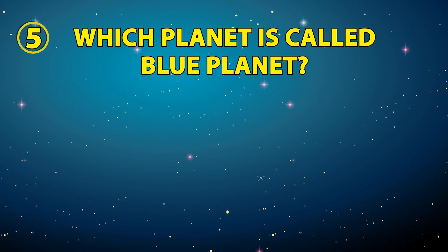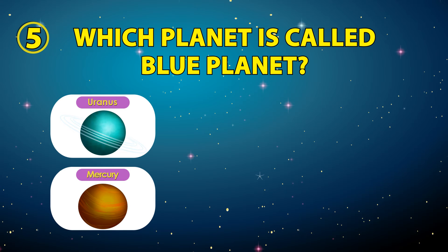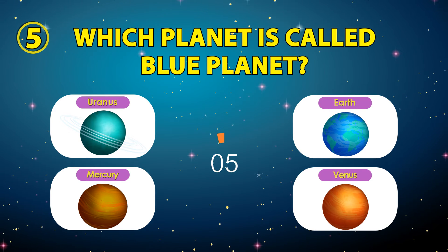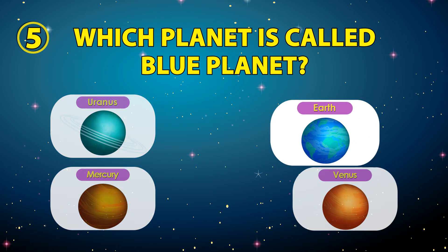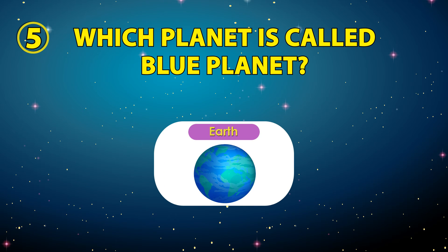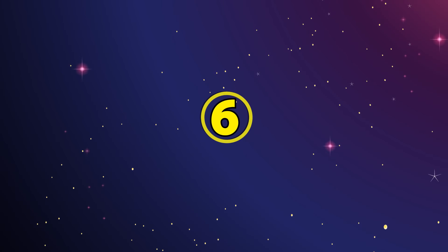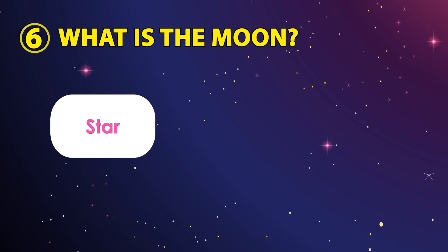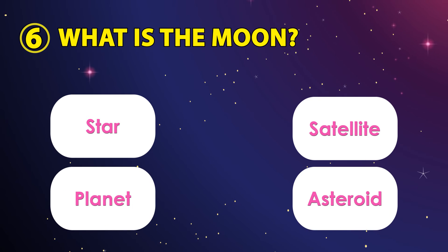Number five: which planet is called the blue planet? The options are Uranus, Mercury, Earth, or Venus. The correct answer is Earth. Number six: what is the Moon? The options are star, satellite, planet, or asteroid.